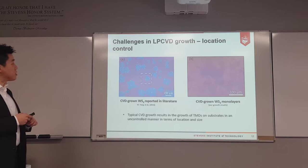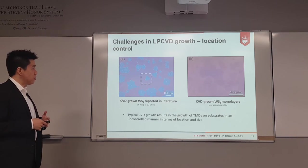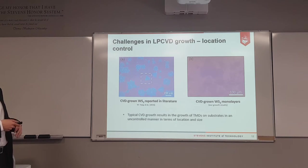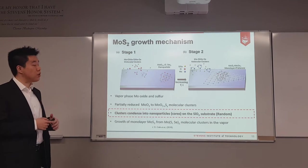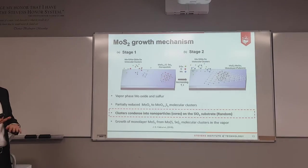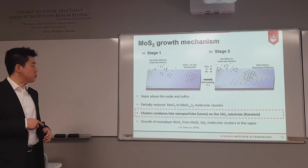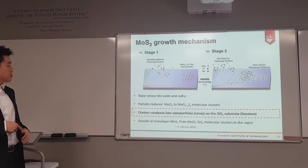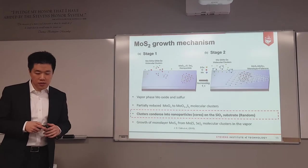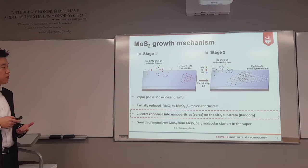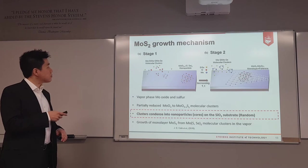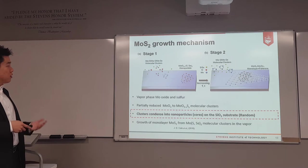The second challenge is location control. Until 2017, the majority of publications reported TMD synthesis in random locations. The basic growth mechanism for LPCVD MoS₂ explains why: molybdenum trioxide and sulfur become vapor phase, molybdenum trioxide is partially reduced to molybdenum oxide sulfur molecular clusters, which then condense into nanoparticles on the silicon dioxide substrate. We cannot control where these nanoparticle nuclei condense, so MoS₂ grows from these random nucleation sites.